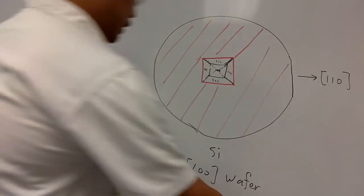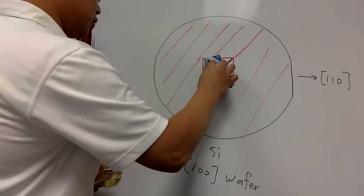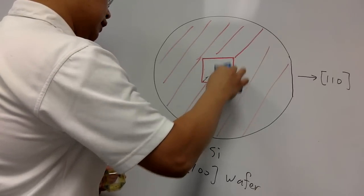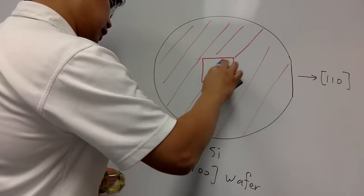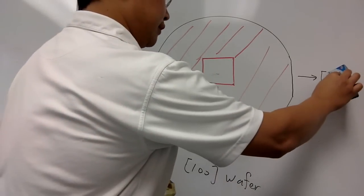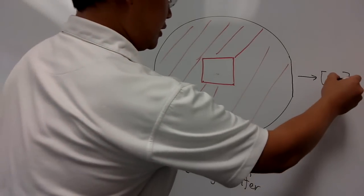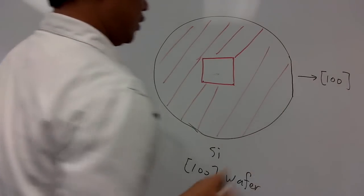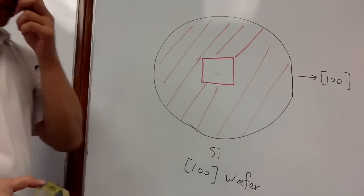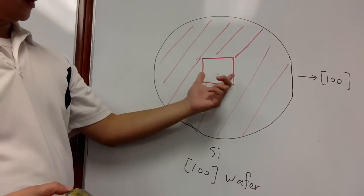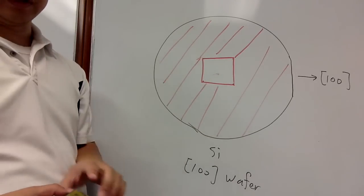Let's show another case. You're still having a square opening, but the difference is that instead of [110], this direction is now [100]. So with the [100] direction aligned to the flat, what kind of final pattern are you going to generate with the same square opening?